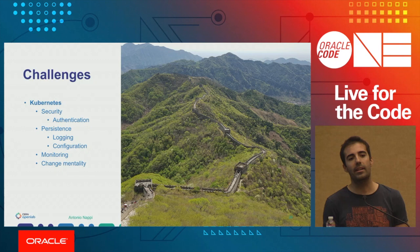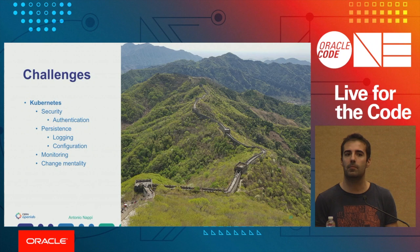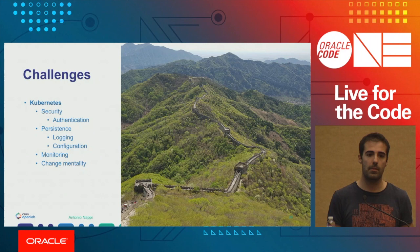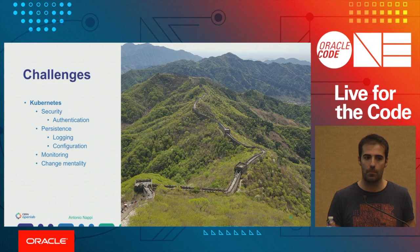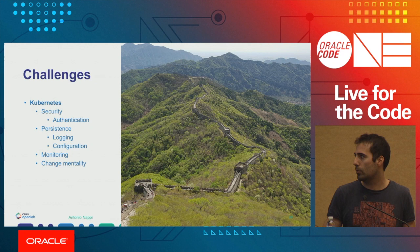Moving to Kubernetes is not straightforward — it takes time, especially because you need to change your mentality. You can no longer rely on a fixed hostname; everything is volatile. When you restart a pod, you lose everything, so logging and monitoring become a challenge. We started implementing a logging stack for containers and implemented TIG — Telegraph, InfluxDB, and Grafana — for monitoring, with all configuration inside Docker images.